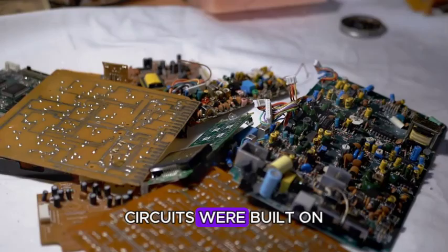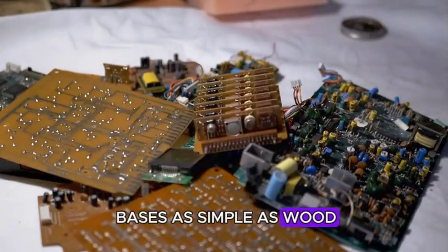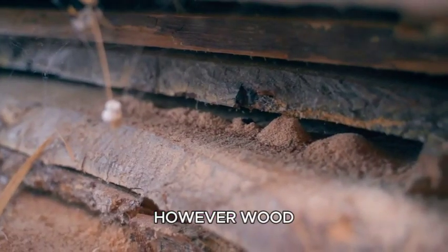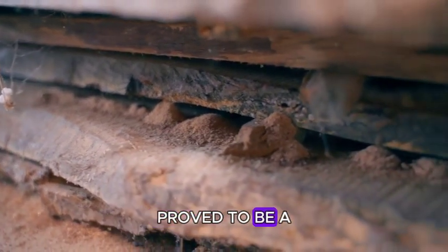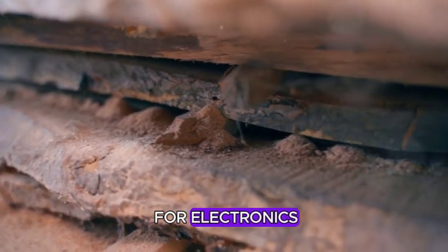Initially, circuits were built on bases as simple as wood. However, wood, with its inherent flaws and susceptibility to moisture, proved to be a less than ideal material for electronics.